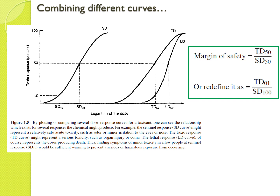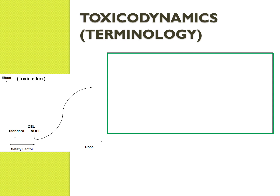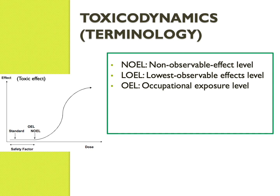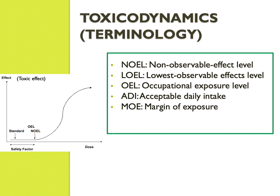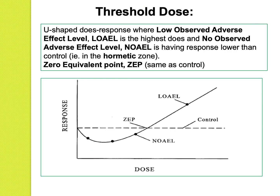There are some terms specific to toxicology: NOEL (non-observable effect level), LOEL (lowest observable effect level), occupational exposure level, ADI (acceptable daily intake), margin of exposure, and margin of safety. Most of the time we don't want even TD10 to happen — especially for things like a new food preservative where no toxicity is acceptable at all. So we look at doses at the very lower part of the curve.